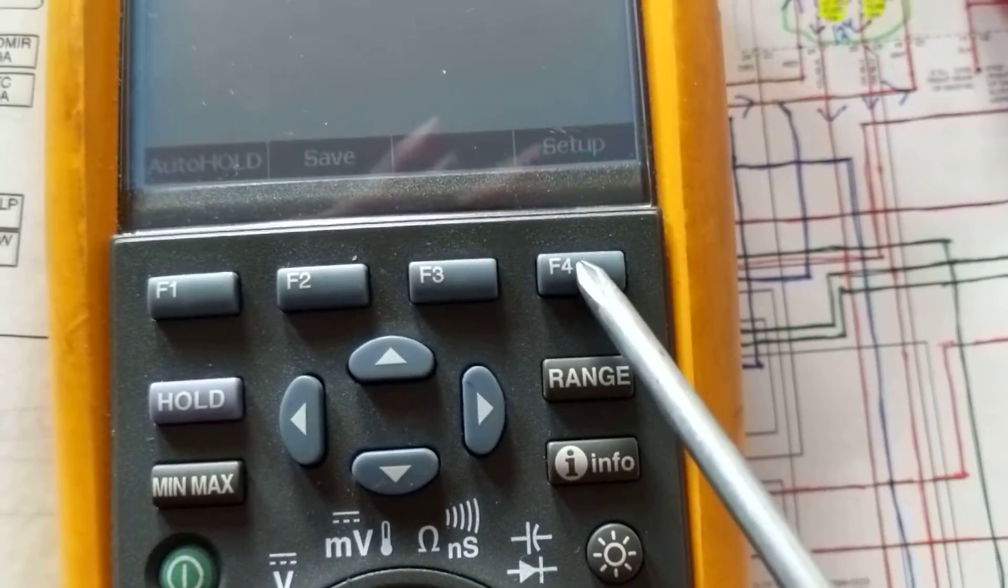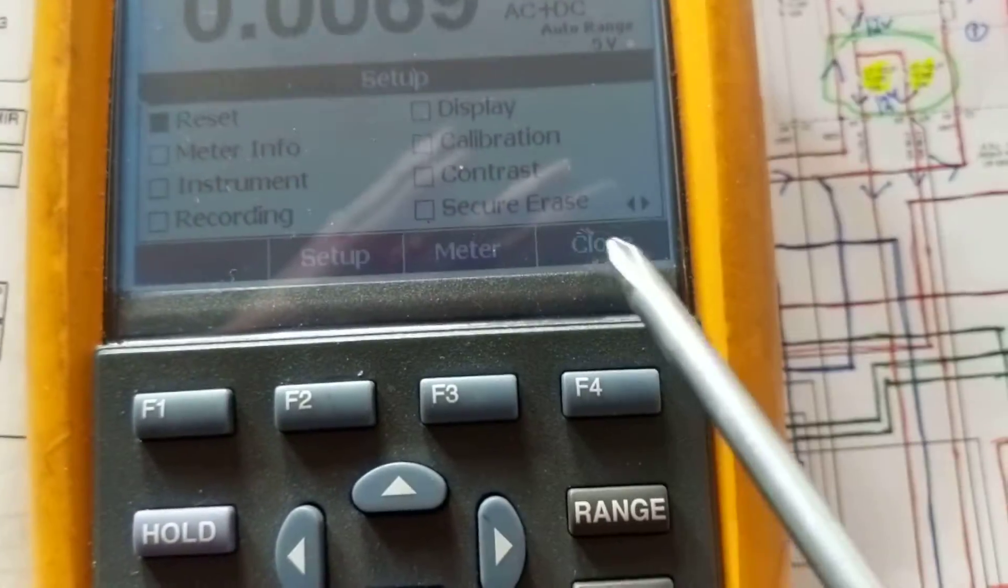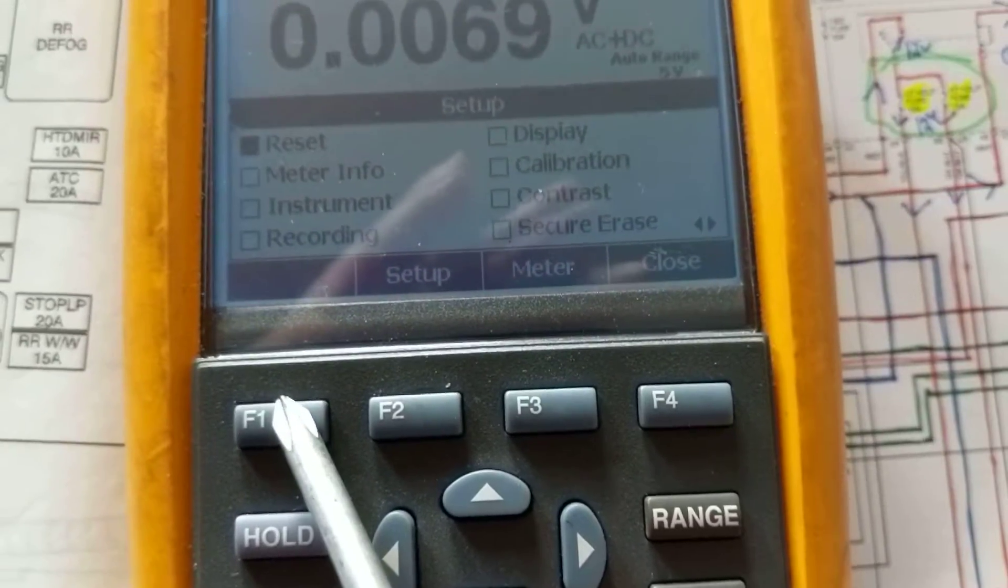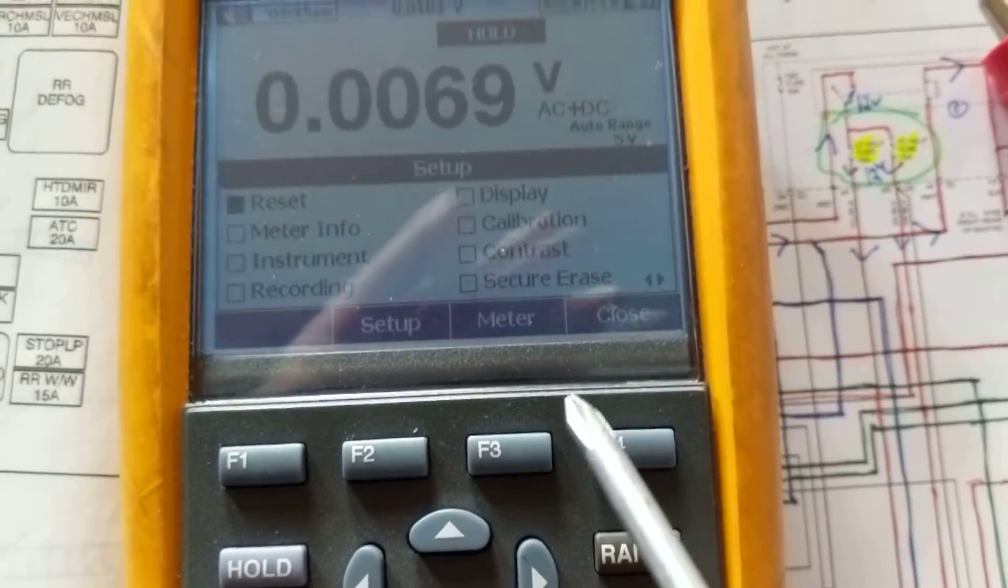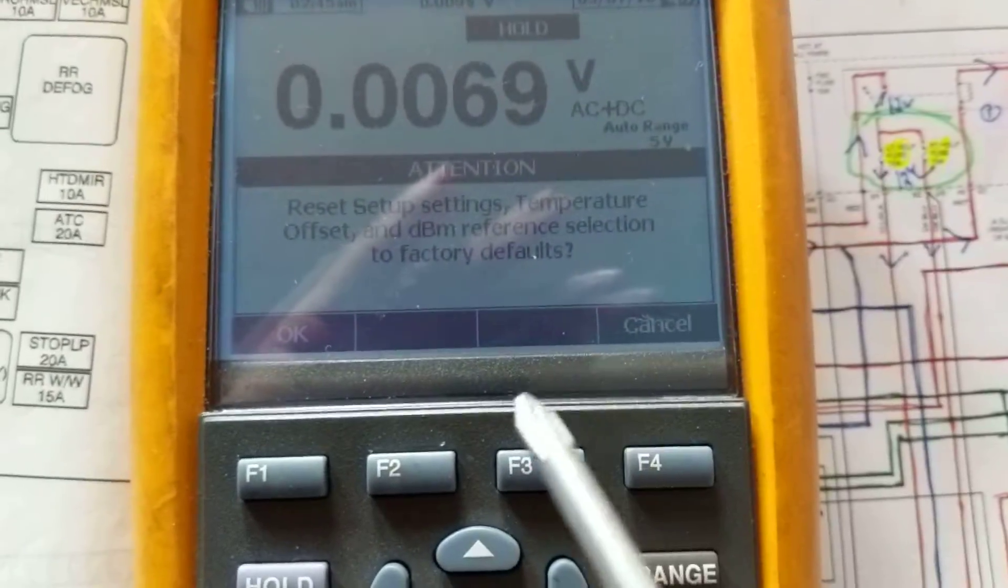As you can see, there's a lot of things that you can store in this meter. But for automotive, remember you also have hertz and other things that you can - if you go like this, menu again, hertz over here.